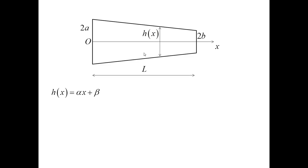To determine those parameters, I observe that H of 0, which is on the left end, is equal to 2A. If I substitute H of X into this equation, I will get that beta is equal to 2A. Similarly, on the right end, H of L is equal to 2B, which gives me the second equation for the parameters alpha and beta. And now I can solve two equations for two unknowns to determine alpha and beta.